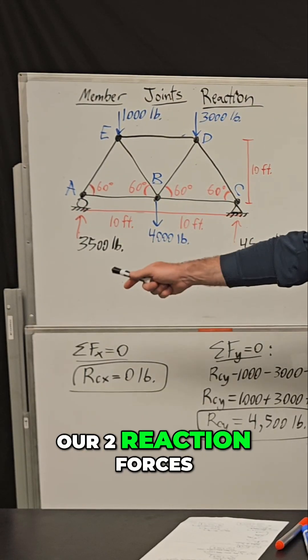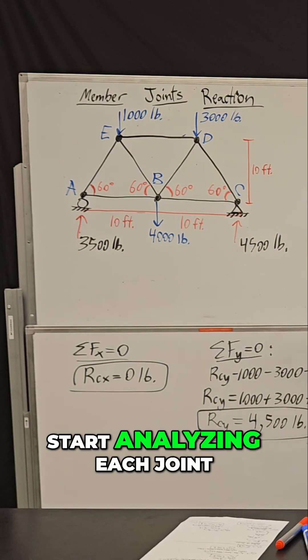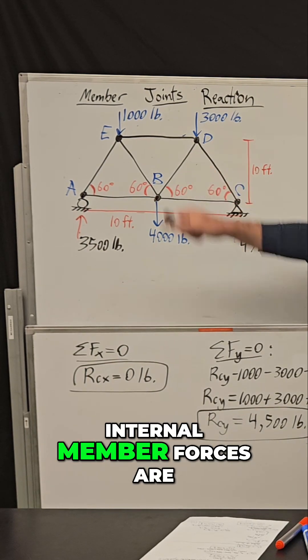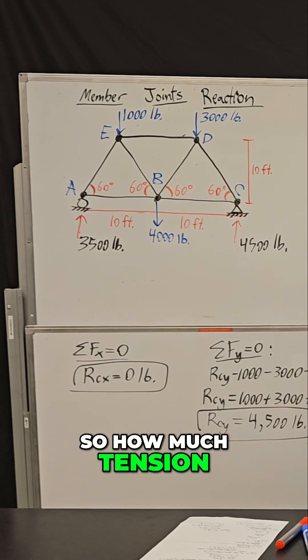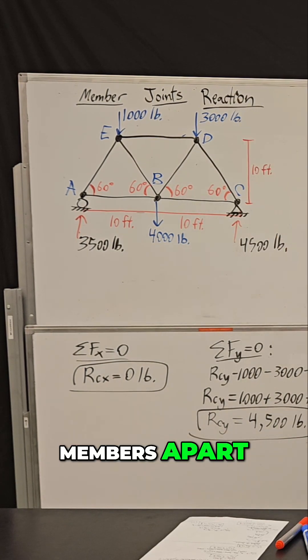Now that we know our two reaction forces at our two supports, we're ready to actually start analyzing each joint of this bridge to figure out what these internal member forces are. So how much tension and compression is either squeezing or pulling these members apart.